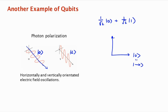This is vertical polarization, which we call |1⟩. You could also have a polarization that makes any angle, and that's the state of the qubit — the polarization qubit that this single photon is carrying along.